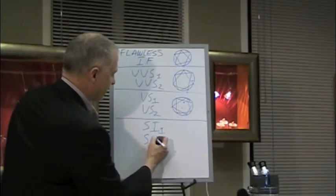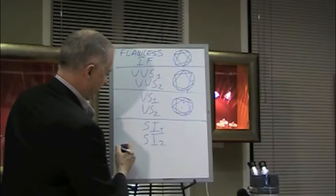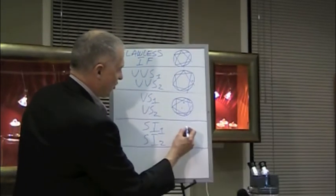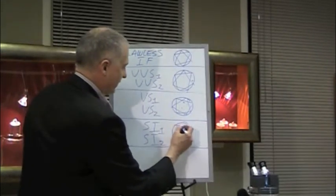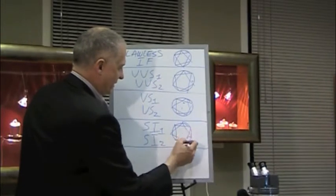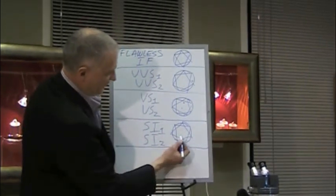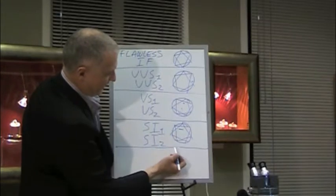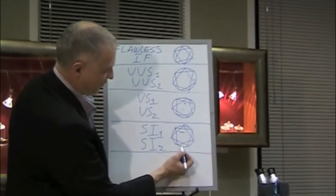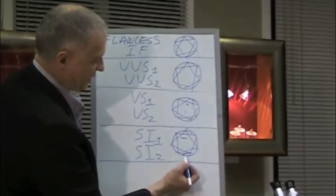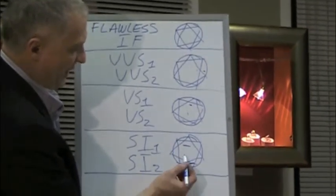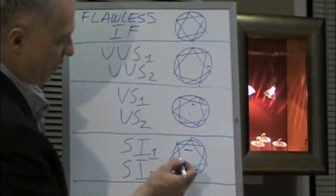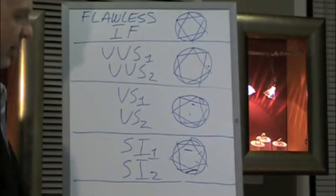Now obviously as you're getting into the SI1s and the SI2s, you're getting into more pronounced and larger inclusions. So it's not uncommon to see something like that in an SI1 or SI2, something quite big off to the side. Or you could have a stone with maybe four or five different inclusions scattered about it.